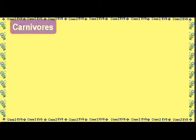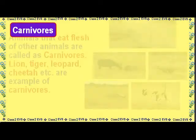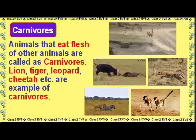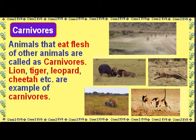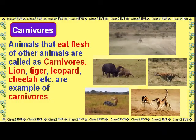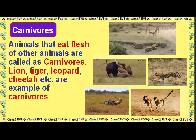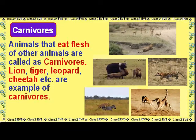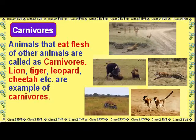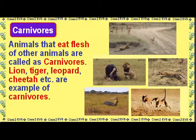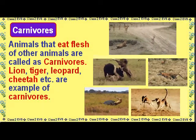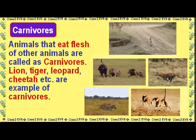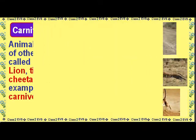Carnivores: Animals that eat flesh of other animals are called carnivores. Examples of carnivores include lion, tiger, leopard, cheetah, etc.